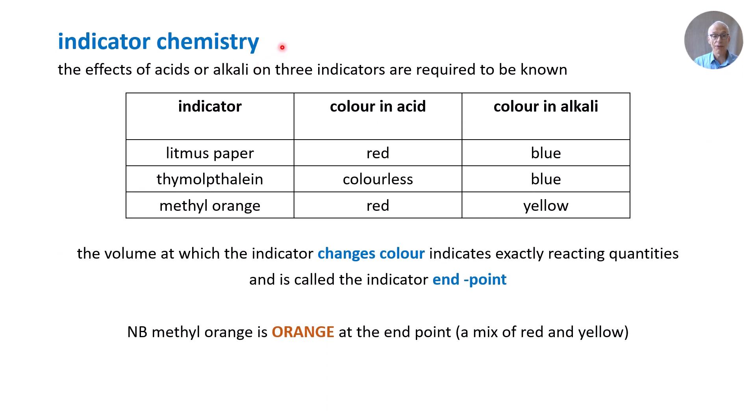There is some factual knowledge required of indicator chemistry. There are three indicators you are required to know about. Litmus paper is red in acid and blue in alkali. Thymolphthalein used in titration is colorless in acid and blue in alkali. Methyl orange is red in acid and yellow in alkali. The volume at which the indicator changes color in a titration indicates exactly reacting quantities. That's why that color change point is so significant and it's the basis of all titration calculations. The point at which the indicator changes color is called the indicator end point.